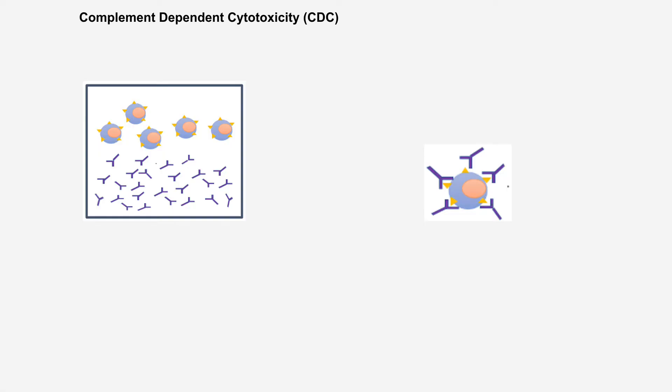Now we will discuss a serology technique used for HLA antigen typing to know which HLA antigens a person has. This technique is called complement dependent cytotoxicity or CDC. We use lymphocytes for identification of HLA antigens, as T cells have HLA class 1 antigens on their cell surface, while B cells have both HLA class 1 and class 2 molecules on their surface. In this technique, if we have known HLA antibodies, we can identify HLA antigens with the help of these antibodies.